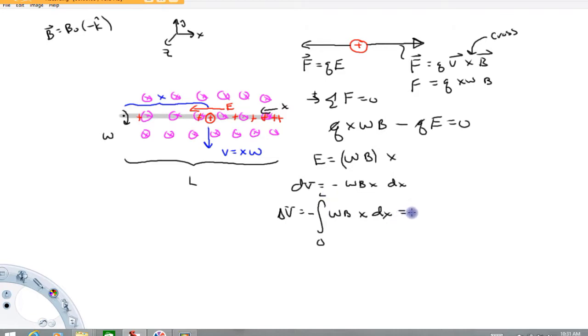So again, we'll bring all the constants out in front. Then the integral of X DX is going to be X squared over two, evaluated zero to L, and putting in the limits, L squared, you know, L and then squaring it minus put in zero square. We get zero. This is what we get for the potential difference between the right and left hand side of the bar.